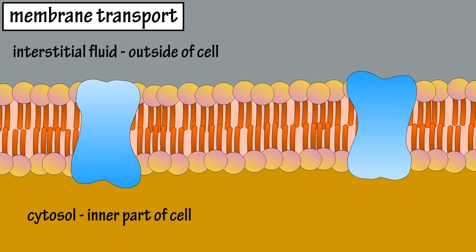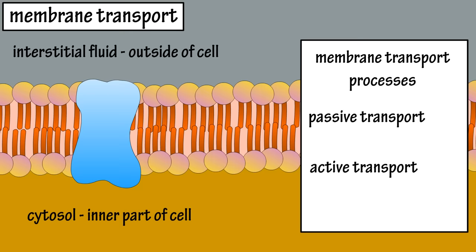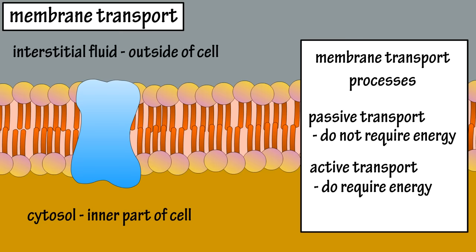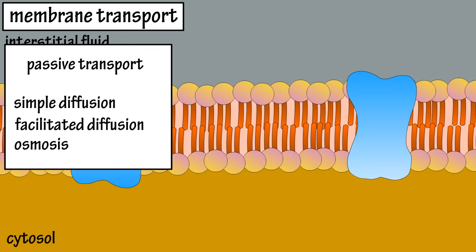Substances move into and out of a cell through several different processes called membrane transport. There are two main processes: passive transport processes and active transport processes. The main difference between the two is that passive processes do not require energy expenditure, and active processes do require the cells to expend energy. The passive processes include simple diffusion, facilitated diffusion, and osmosis.